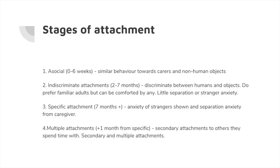First, the asocial stage — between zero and six weeks — where the infant doesn't discriminate between carers and non-human objects, so it's not necessarily showing socialisation. Then there's the indiscriminate stage, between two months and seven months, where they do discriminate between humans and objects, tend to prefer familiar adults, but would still not mind being passed around and can be comforted by any caregiver generally. There's less separation anxiety and less stranger anxiety at this stage.